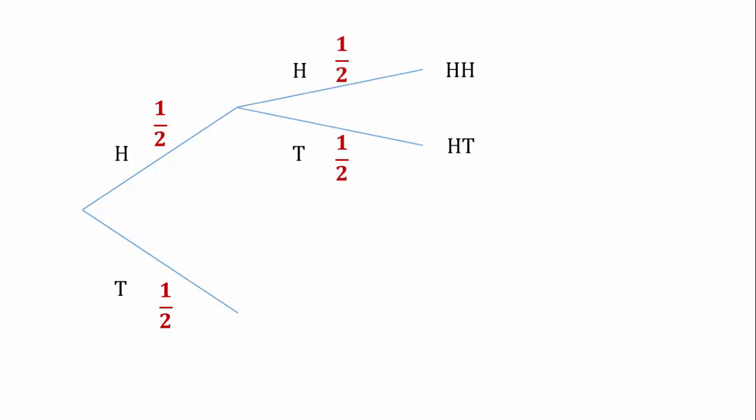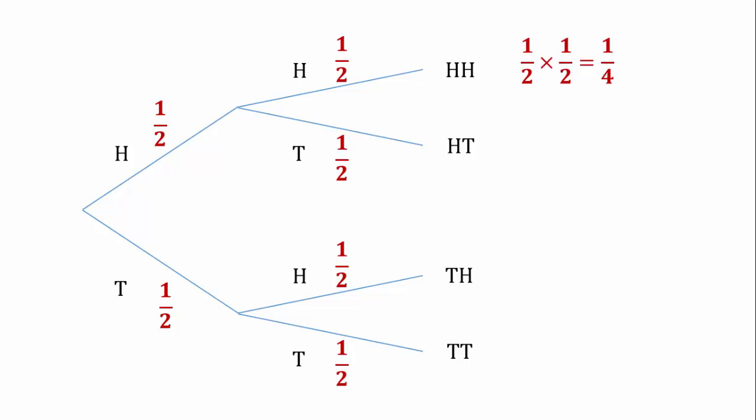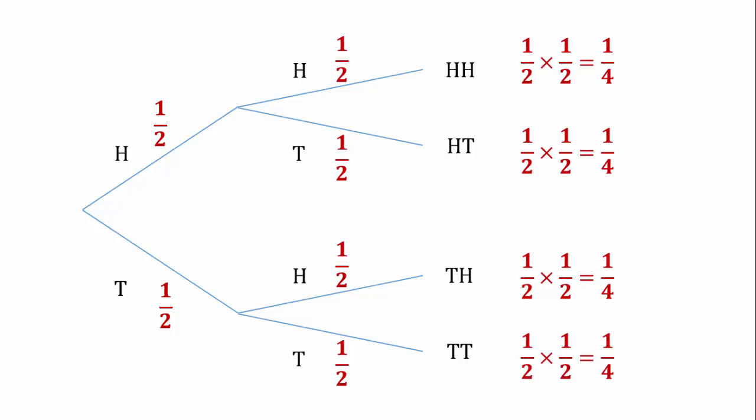Now let's extend the tree to a second toss. If the first toss resulted in a head, since the events are independent — that is, the result of the second toss is not affected by the first — then the probability of head and tail will remain half each. The same applies when the first toss was a tail. We can calculate the joint probability of two heads by multiplying the two probabilities, since these are independent events. Head-tail, tail-head, and tail-tail all give results of 1/4, indicating that the outcomes are equally likely, just as we treated them earlier.